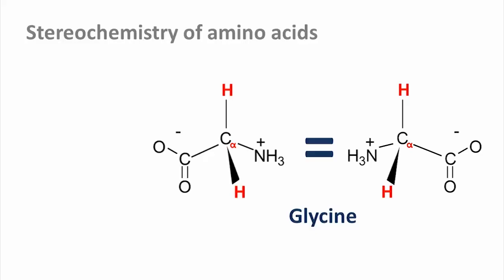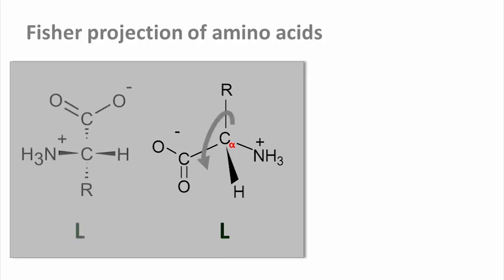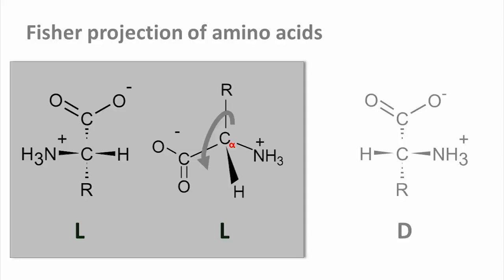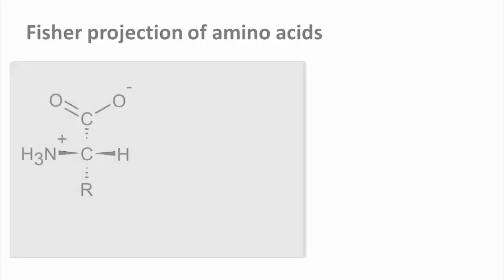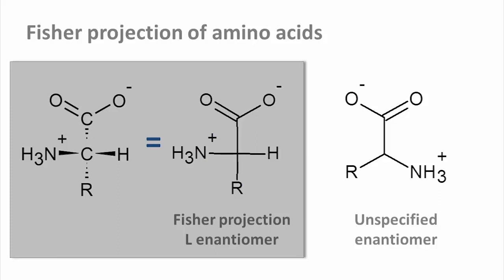To indicate in a more systematic way which configuration the residues have, we sometimes use the Fischer projection. Imagine the carboxyl group and the side chain pointing vertically out of the plane of the screen or paper. The amino group and the hydrogen atom then point towards us. In this orientation, L-amino acids have the amino group pointing left, and D-amino acids have it pointing right — that's actually how the nomenclature came about. This projection is then flattened to give the Fischer projection. It is important to remember that this representation with the vertical and horizontal bonds has a precise meaning. If we draw an amino acid in the skeletal form, we do not specify the stereochemistry — this could be either an L- or a D-amino acid.